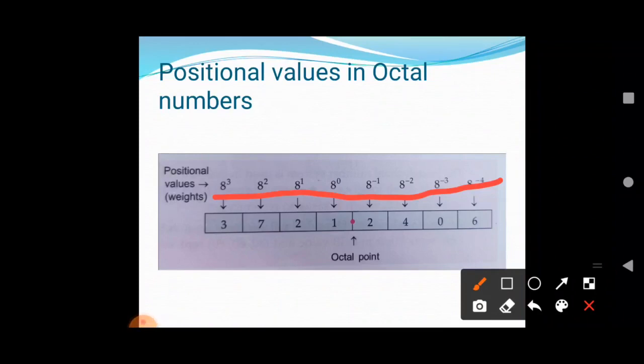Now, to find the decimal equivalent of an octal number, simply take the sum of products of each digit value and its positional value. We are using these positional values. We will discuss in our live class.